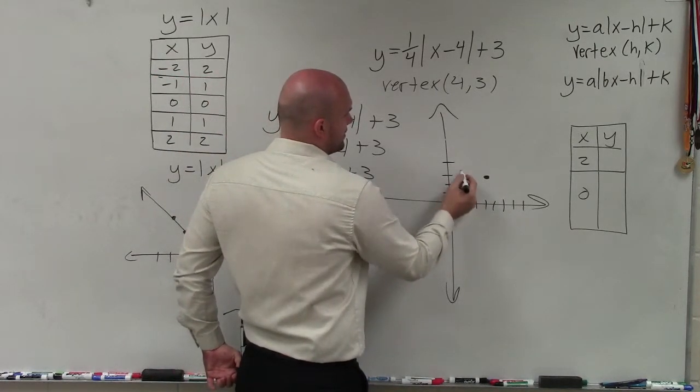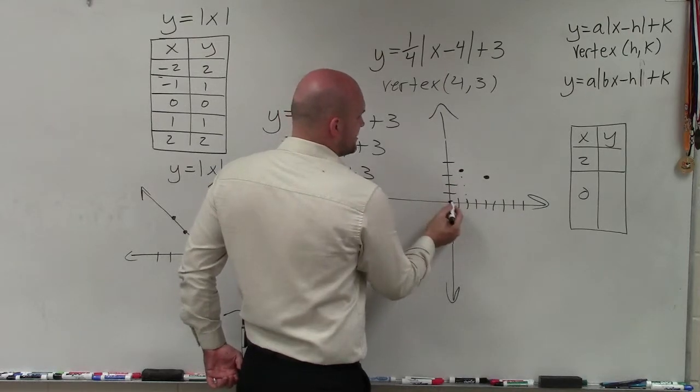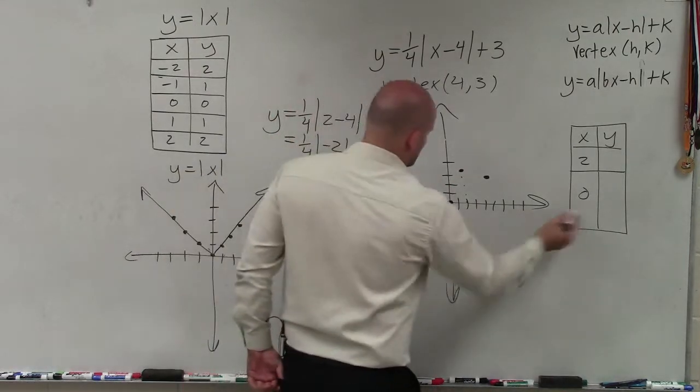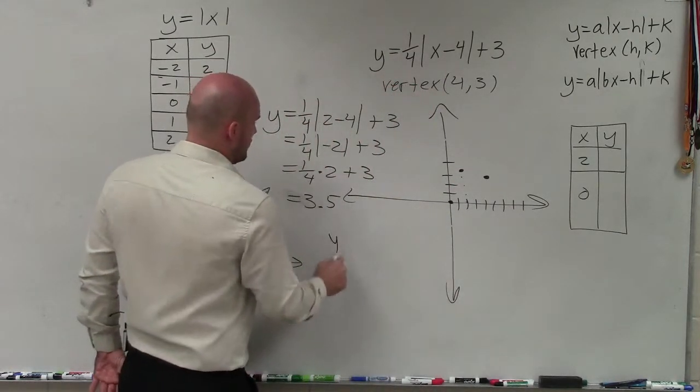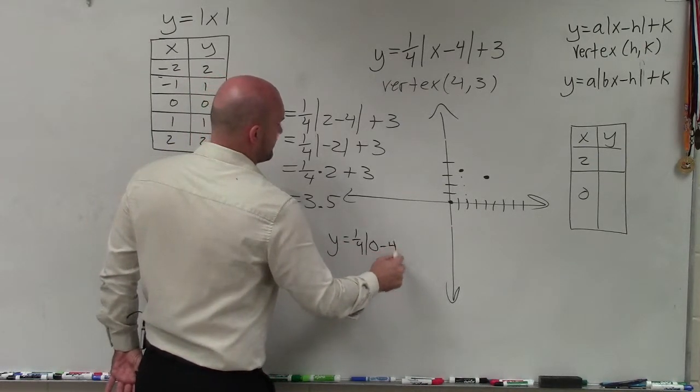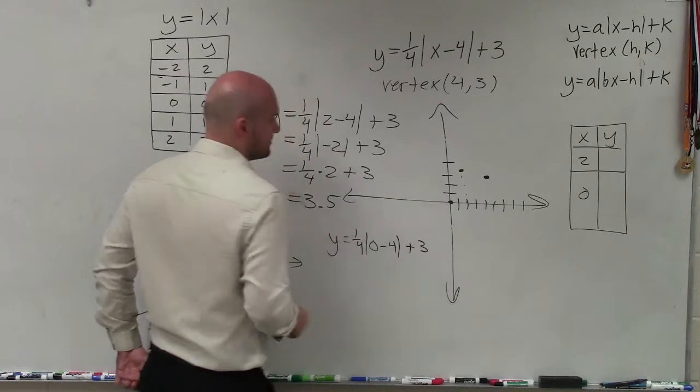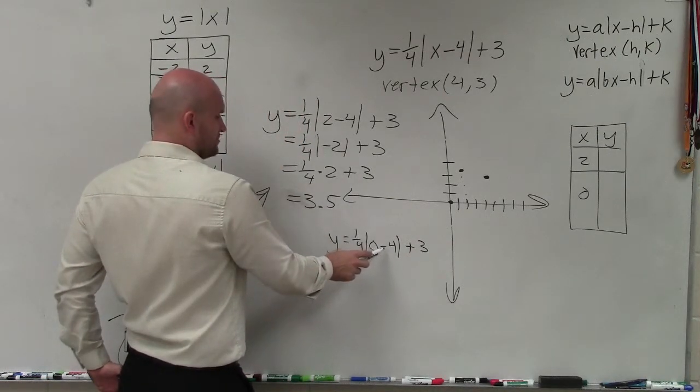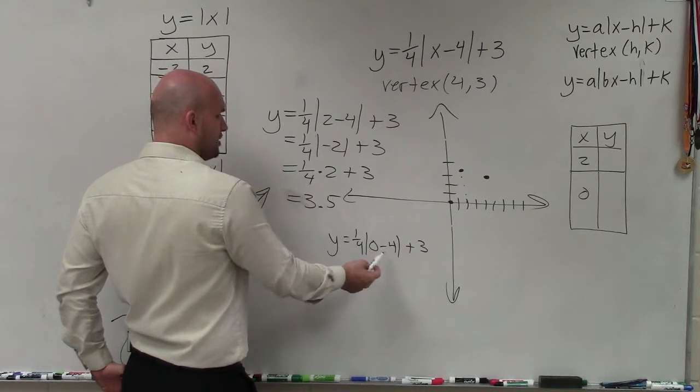Now let's go to 0. So let's plug in 0. So now I'll do the exact same thing. y equals one-fourth times 0 minus 4 plus 3.